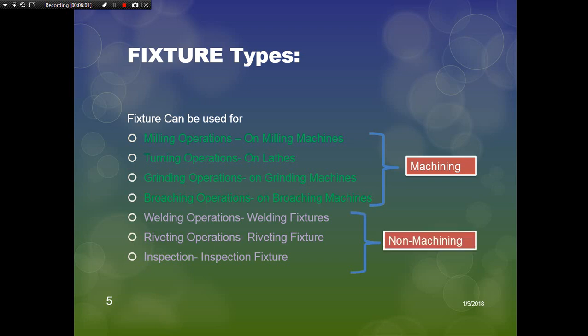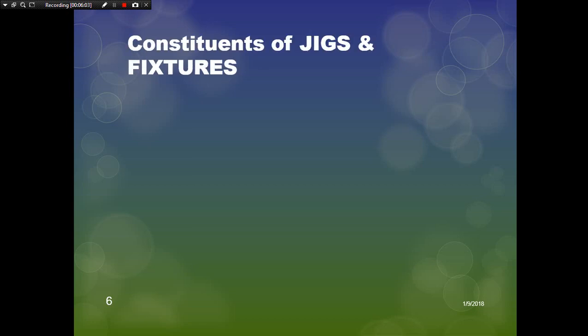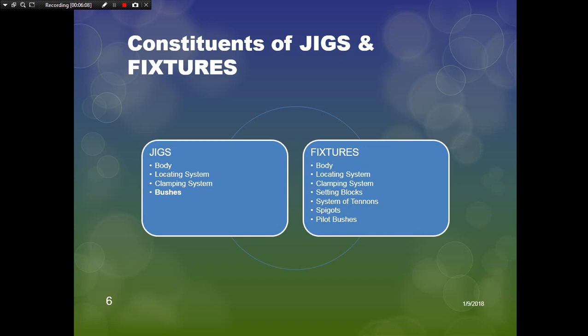The constituents of jigs and fixtures: jigs consist of a body, locating system, clamping system, and bushes. Fixtures consist of a body, locating system, clamping system, and additionally setting blocks, tenons, spigots, and pilot bushes. There are three common constituents: the body, the locating system, and the clamping system.